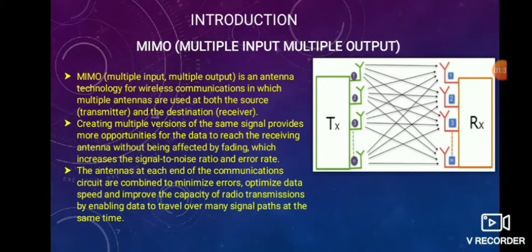Here is a diagram showing the various ways in which MIMO can be connected. We can see TX, which stands for transmitter, and RX, which stands for receiver.